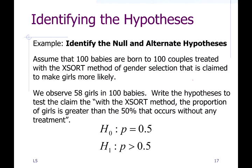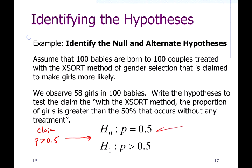We're testing the claim that the proportion of girls is greater than 50%, which is what we'd expect if there were no treatment. We start with the claim — proportion greater than 0.5 — then move on to stating the hypotheses. The null hypothesis is always a statement of equality, and the alternate hypothesis is either greater than, less than, or not equal to. If the claim contains one of those three symbols, the alternate hypothesis will be the same as the claim.